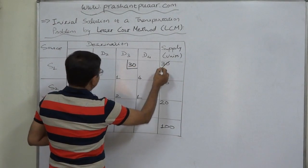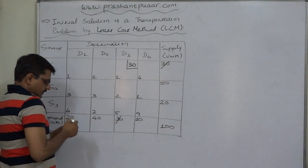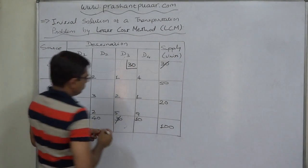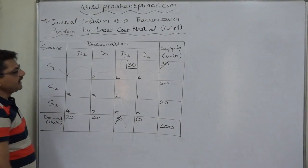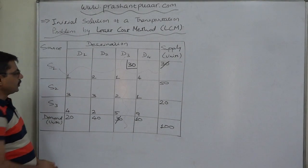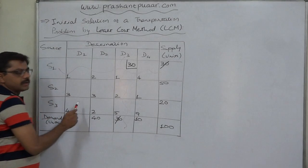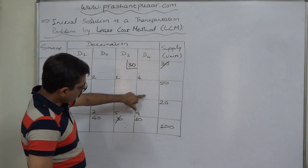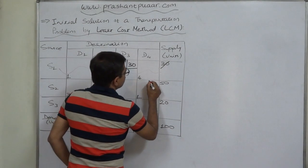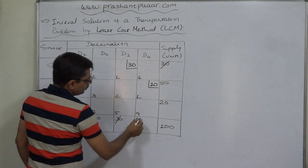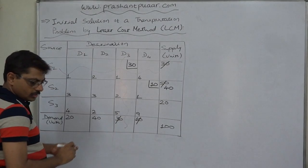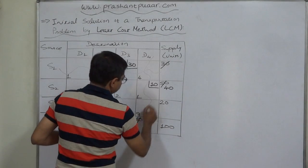We select the cell where 30 units can be allocated. Supply of S1 is exhausted and demand of D3 is satisfied, so we cancel both the D3 column and the S1 row. Moving to the remaining 6 open cells, the least cost is again 1. The possible allocation is: demand 10 units, supply 50 units — whichever is lower — so we allocate 10 units to this cell. Demand of D4 is satisfied; supply of S2 still has 40 units remaining, so we cancel only the D4 column.